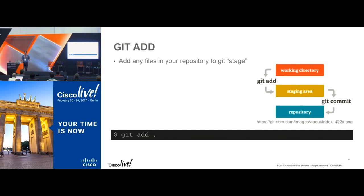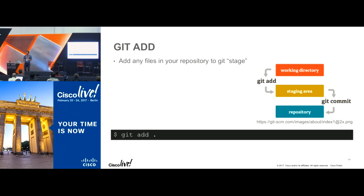Once you've done that, you still have an empty repository, so you have to do more things to start tracking your files as you change them. You need to understand that you have a working directory, a staging area, and then finally — once you commit — you have the content going into the repository. To get files into the staging area, you type "git add" followed by the file or dot for the local folder.